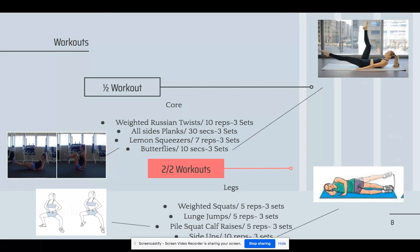I created a program that consists of two days. The first day was core: my client Sophie worked on weighted Russian twists, planks on either side of her body, forward both-arm elbow planks, lemon squeezers, and butterflies. The next workout day was for legs: she worked on weighted squats, lunge jumps, and plie squat calf raises and side steps.